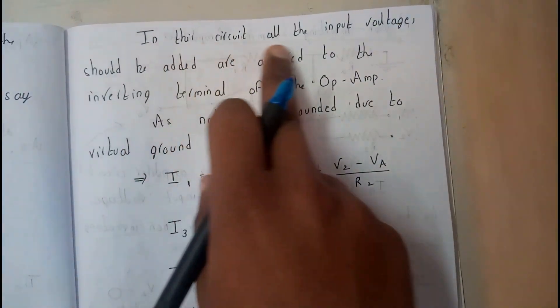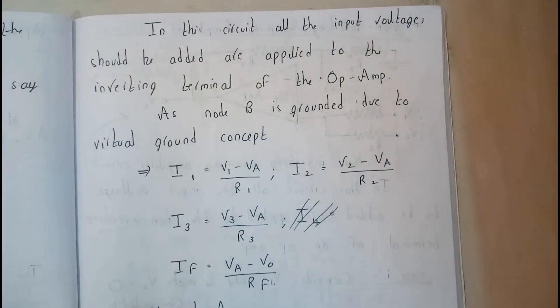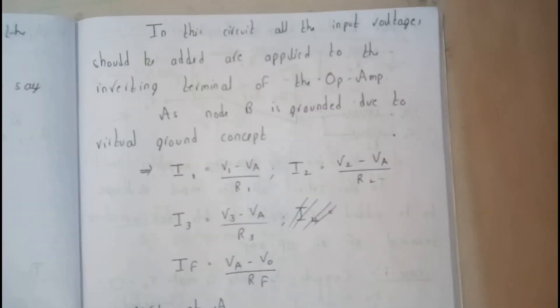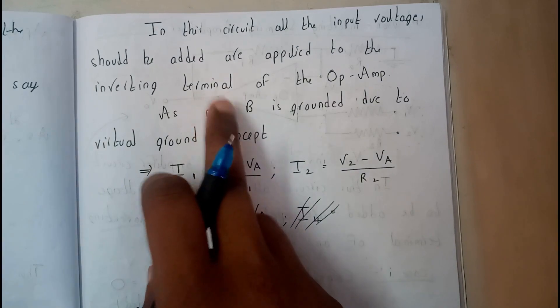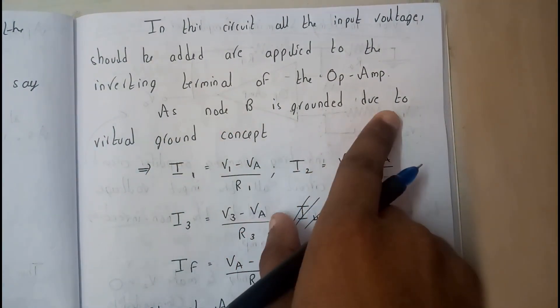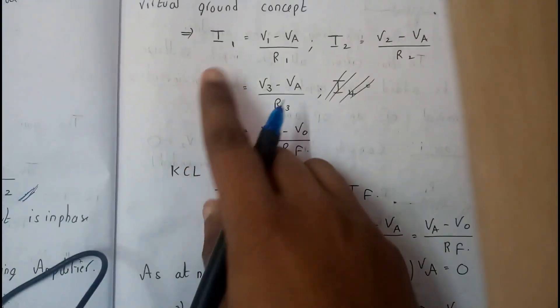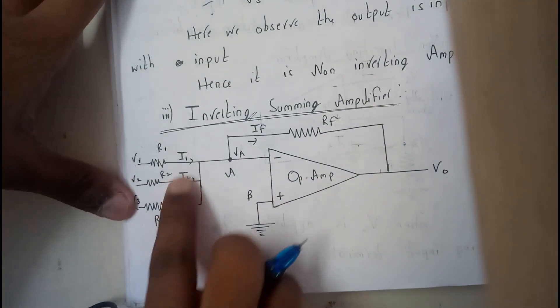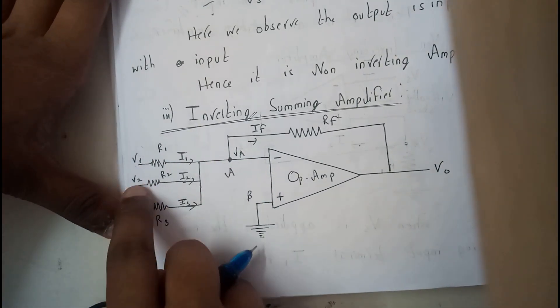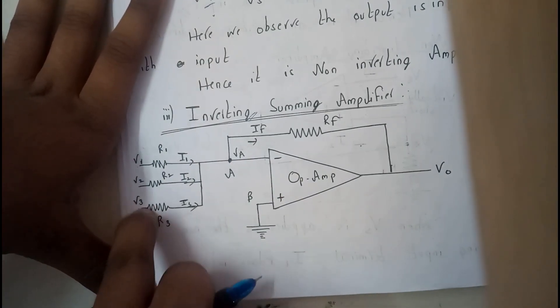In the circuit, all three inputs are applied to the inverting terminal of the operational amplifier — that's the important point. As node B is grounded due to the virtual ground concept, we can write: i1 is nothing but V1 minus Va by R1, and i2 is nothing but V2 minus Va by R2.